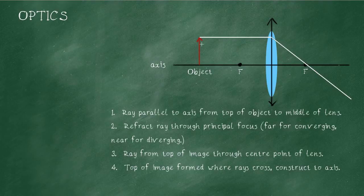Step three, we do another ray from the top of the object all the way through the very centre of the lens - the point at which the axis and the line through the middle actually cross. That's step three.